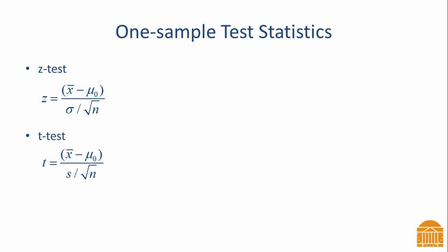The sampling distribution for this statistic is a standard normal distribution. We compare our z-test to critical values from a standard normal distribution to determine whether to reject or fail to reject the null hypothesis.